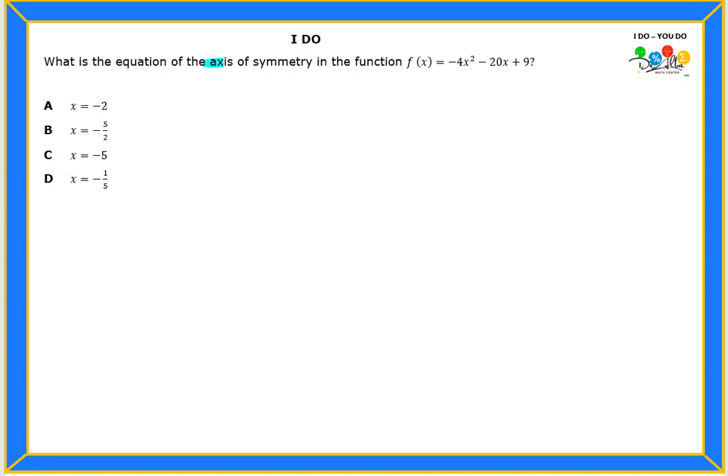So we're looking for the axis of symmetry, right? And they're giving us a function already. So I don't know if you remember, but there's a formula that we can actually use for the axis of symmetry. And we have it right here, and it says x equals negative b over 2a.